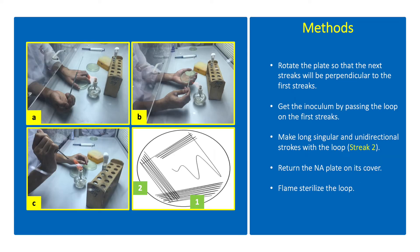Rotate the plate so that the next streaks will be perpendicular to the first streaks. Get the inoculum by passing the loop on the first streaks. Make long, singular, and unidirectional strokes with the loop. Return the NA plate on its cover, then flame sterilize the loop.